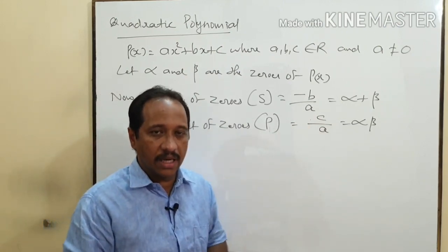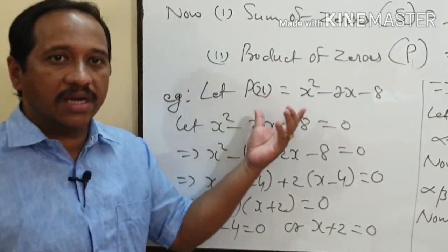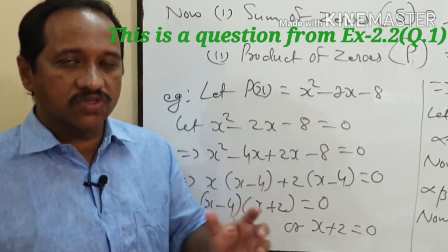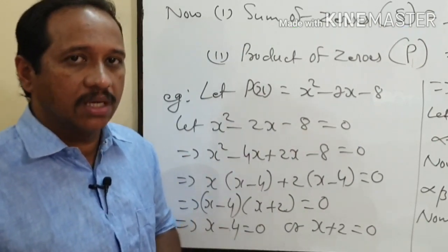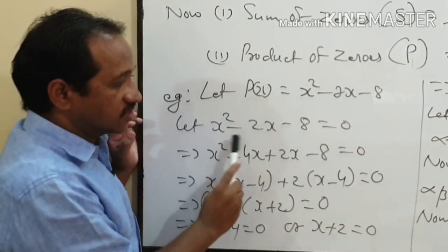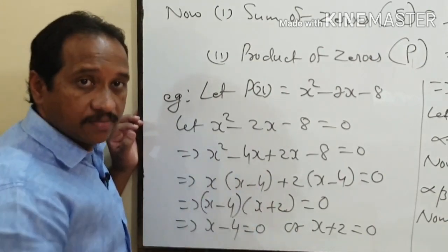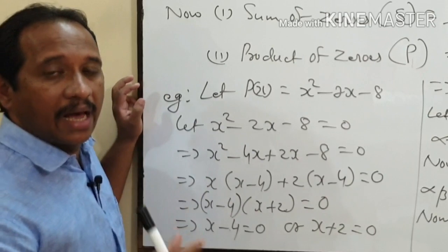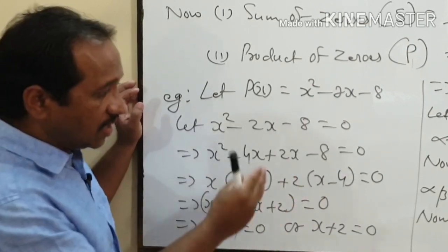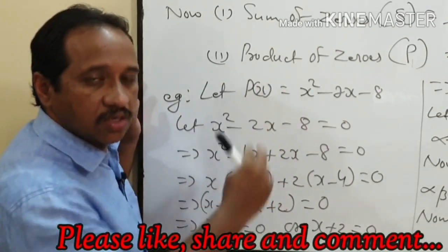Let us consider an example and verify the relation between the coefficients and zeros of a quadratic polynomial. We consider p(x) = x² − 2x − 8. A quadratic polynomial can have at most two zeros. To find the zeros we equate the polynomial to zero: x² − 2x − 8 = 0. We will use the factorization method — splitting the middle term — to get two factors and from them the two zeros.